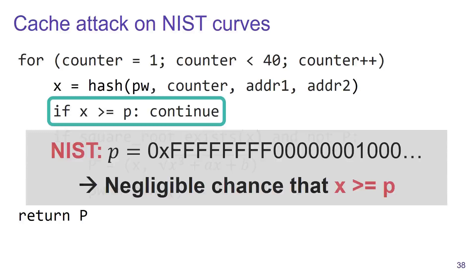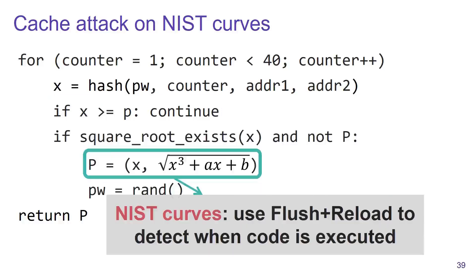The advantage of our cache attack is that they work even when the victim is using NIST elliptic curves. This is because our timing attacks are not possible against NIST curves, since there the x coordinate is very unlikely to be higher than the prime P of a NIST curve. However, using our cache attacks we can monitor when the password element has been found using the flush and reload technique.